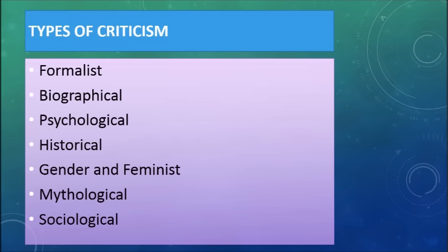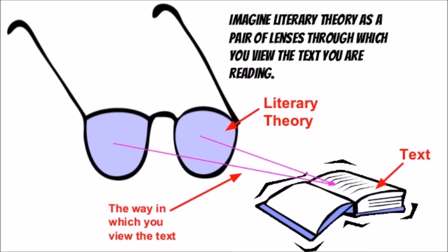These are types of literary criticism we're going to be talking about today. Think of it like glasses that you're putting on. You're putting on the glasses of formalist criticism, which we'll talk about in a second. You're putting on the glasses of feminist criticism, and you're just viewing the text in a different way to learn something new about that text, something new about the person who wrote it, or about the human condition in general.